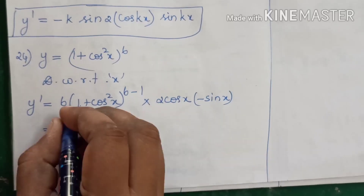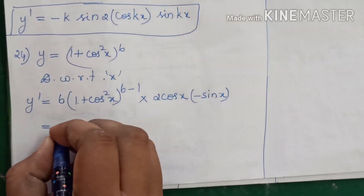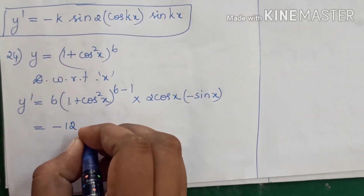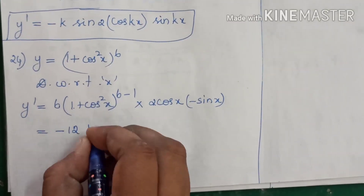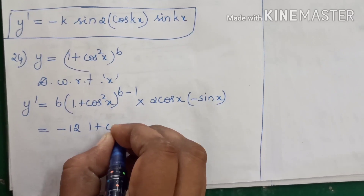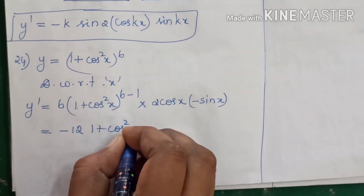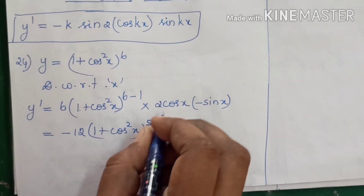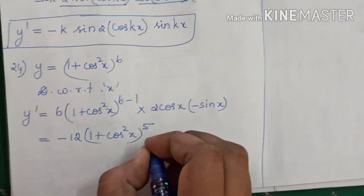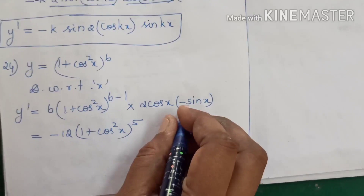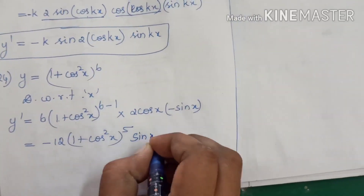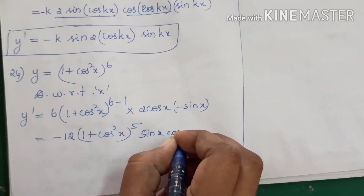So the answer is: combining the numerical coefficients gives minus 12. So y dash equals minus 12 into (1 + cos²x) to the power 5, into sin x cos x — taking the minus outside.